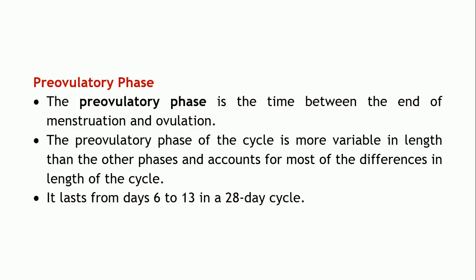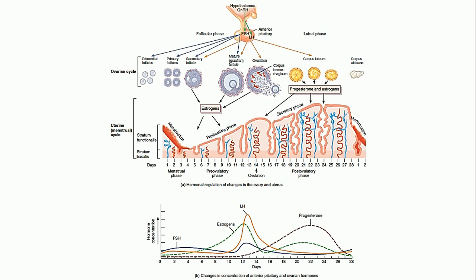The second phase is the pre-ovulatory phase — the time between the end of menstruation and ovulation. This particular phase is the most variable in length out of all the phases. The variation in cycle length of 24 to 36 days is mainly due to this pre-ovulatory phase. When considering a 28-day cycle, it lasts from day 6 to day 13.